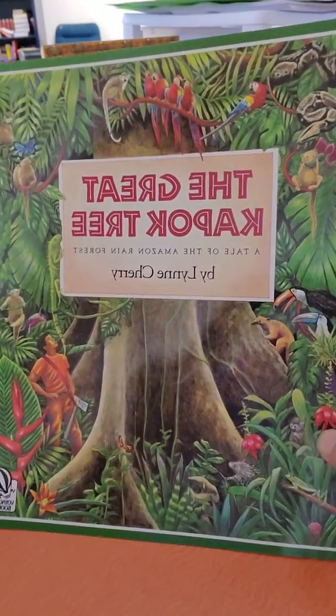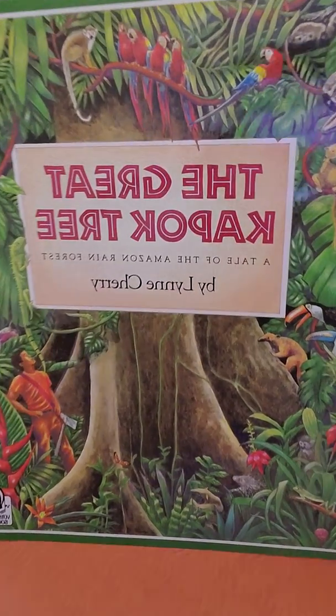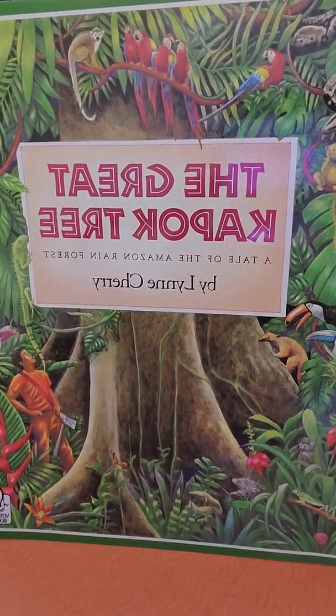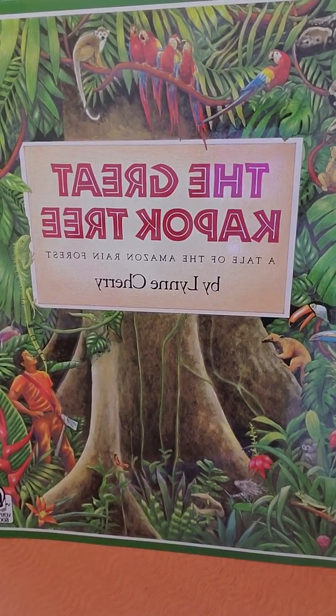We're looking at the front cover. The Great Kapok Tree, The Tale of the Amazon Rainforest by Lynn Cherry. I see a very large tree. I see all kinds of animals all over here. I see a little man down at the bottom with an axe. Alright, let's see what's on the back.